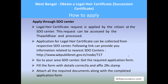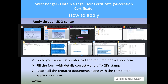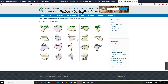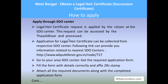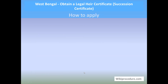To apply through the SDO center, the legal heir certificate request is applied by the citizen at the SDO center. This request can be accessed by the Thasildhar and processed further to issue the certificate. The application form can be collected from the SDO center. Go to your area SDO center, get the required application form, fill the form with the details correctly, affix a 2-rupee stamp, attach all required documents along with the completed application form, and submit it.